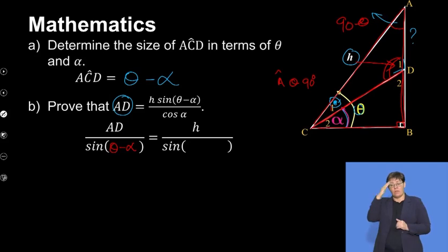In our sine rule we're going to say AD over sine of C1 equals H over sine of D1, and D1 we said was 90 plus alpha.